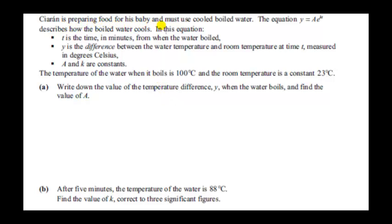Ciarán is preparing food for his baby and must use cooled boiled water. The equation Y equals AE to the KT describes how the boiled water cools. In this equation, T is the time in minutes from when the water boiled, Y is the difference between the water temperature and room temperature at time T measured in degrees Celsius, and A and K are constants.